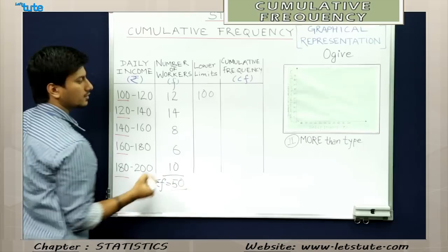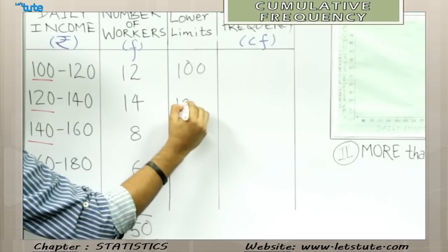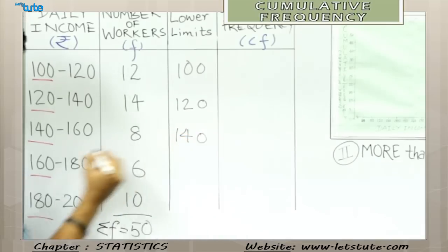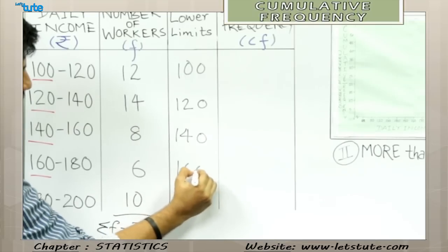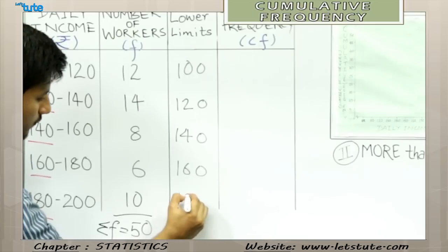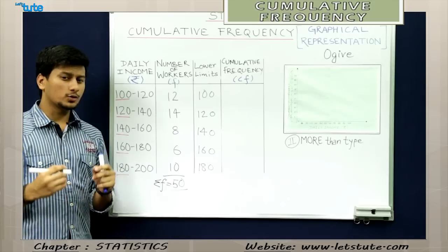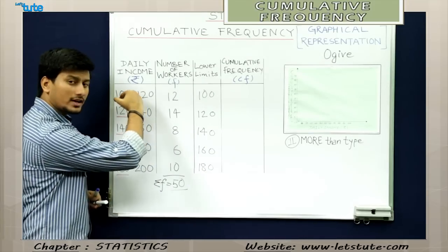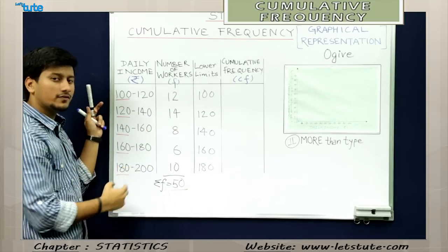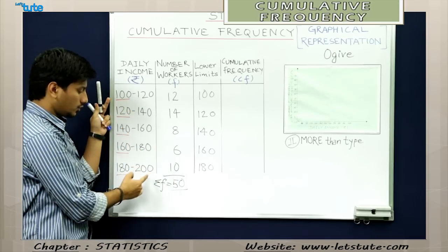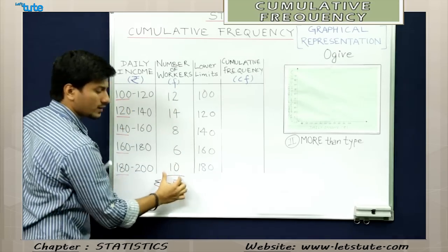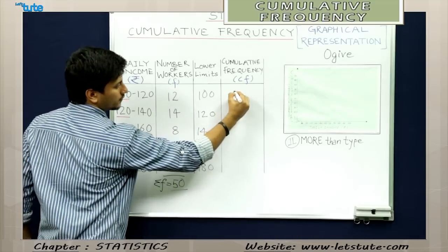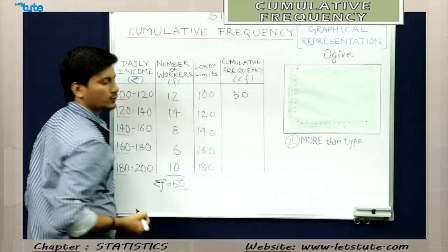Let us write these lower limits down in another column. 100 is the lower limit for the first group, 120 for the second, 140 for the third, 160 for the fourth, and 180 for the fifth. When we calculate the cumulative frequency for everything more than 100, it covers frequencies from 100 to 200, so every frequency falls under this category. Since total frequency is 50, the first cumulative frequency is 50.